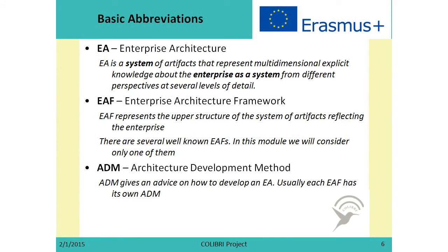We will start with some basic abbreviations which will be used throughout the module. The first one is EA, which stands for Enterprise Architecture. Enterprise Architecture is defined as a system of artifacts that represents multidimensional explicit knowledge about the Enterprise as a system, from different perspectives at several levels of detail.